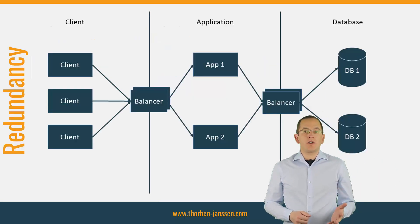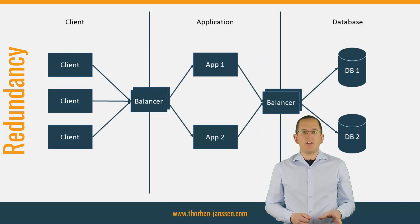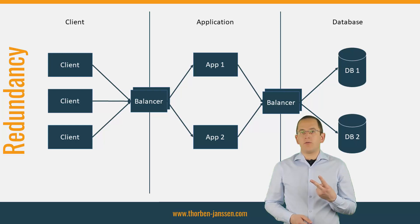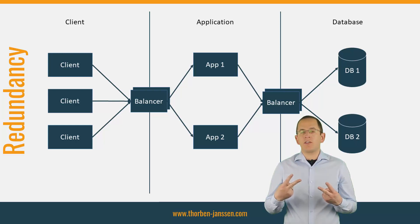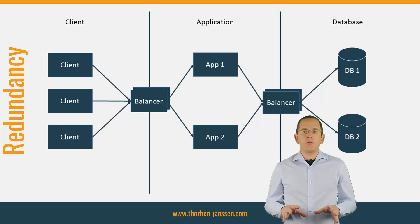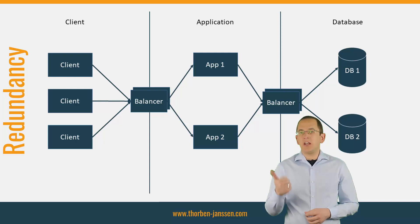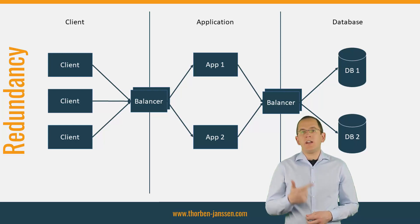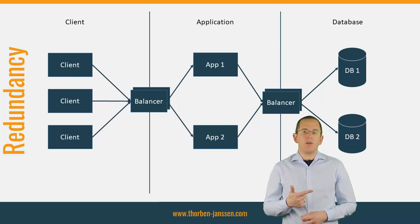If you want to build a high available system, you need to run at least 2 instances of every subsystem. In the simplest case, you need at least 2 instances of your application and 2 instances of your database server. The redundancy of all subsystems provides a lot of benefits. The 2 most important ones are: it increases the number of parallel requests that your system can handle, and it makes sure that your system is still up and running even if an instance of one of your subsystems isn't available.